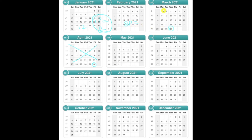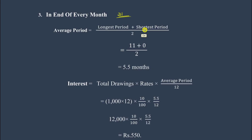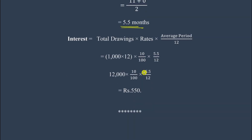The longest period is 11 months. The shortest period is from the last withdrawal date — March 31st — to the accounting year end March 31st, which is 0 days, so the shortest period is 0. Average Period = (11 + 0) / 2 = 5.5 months.